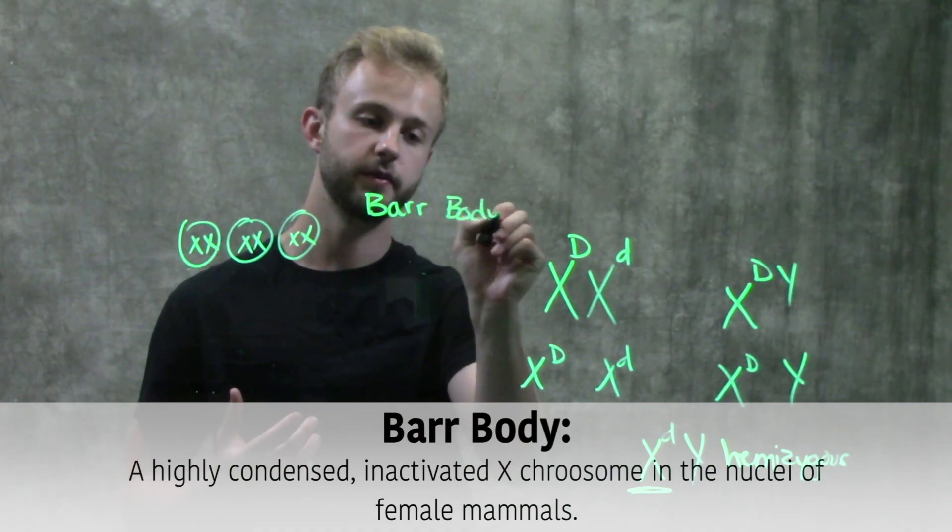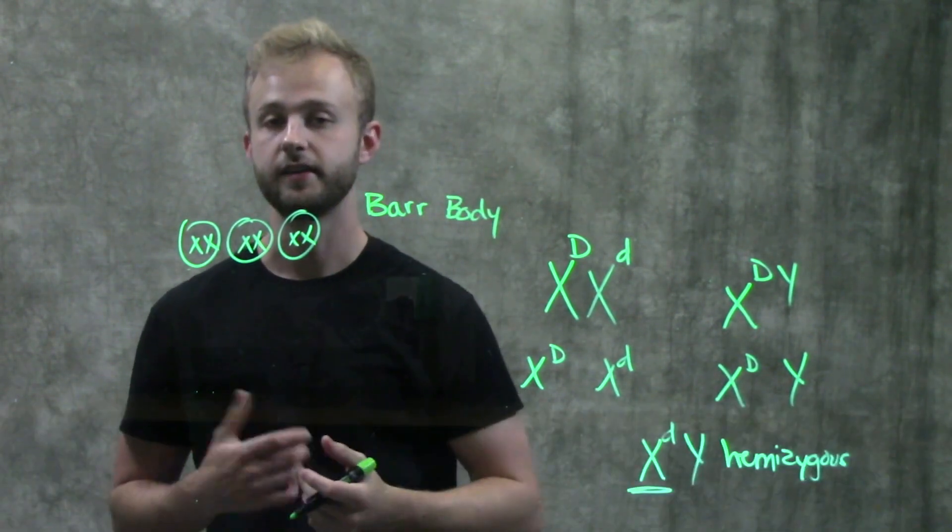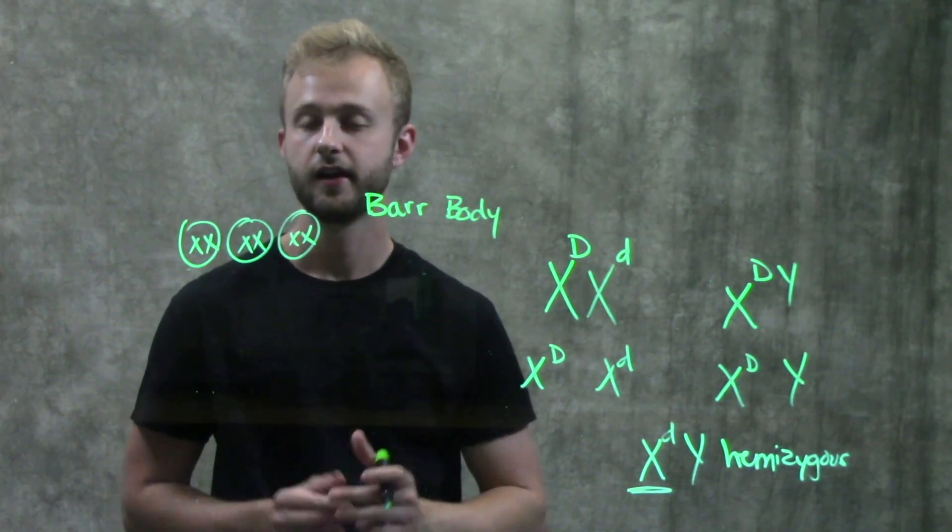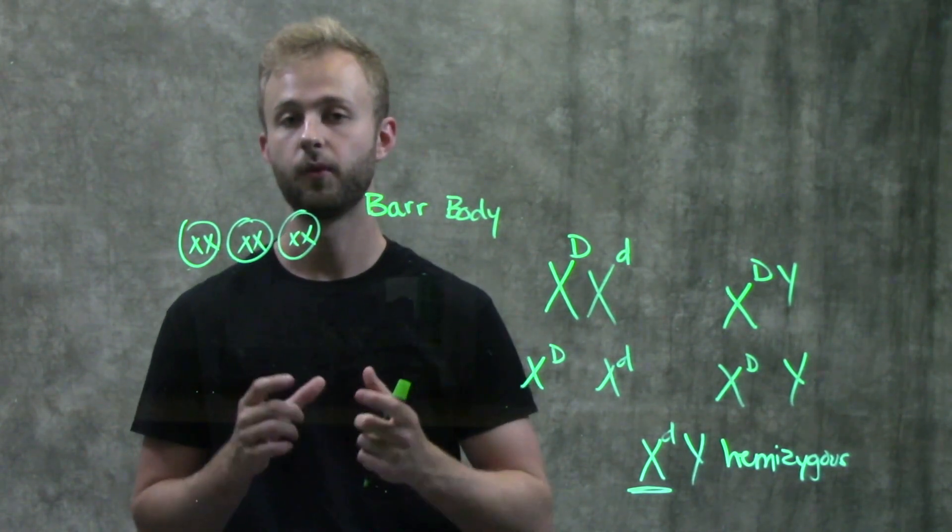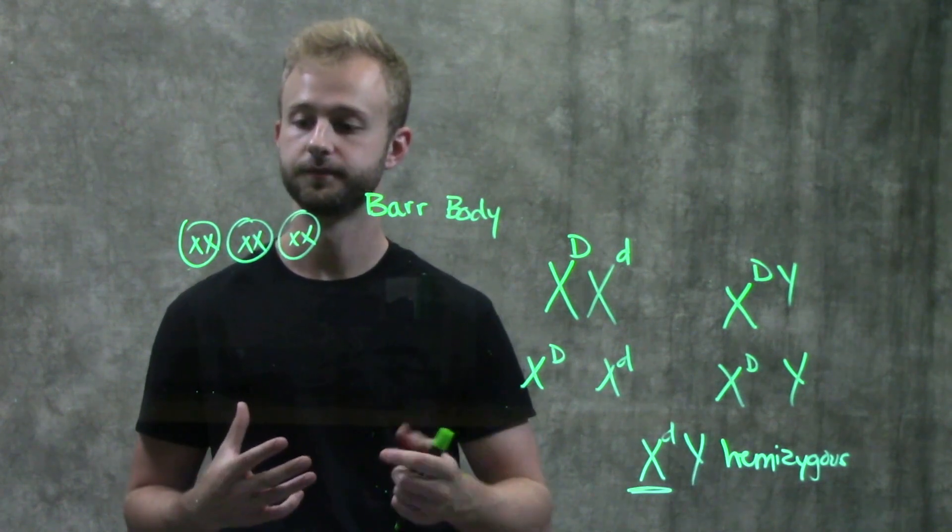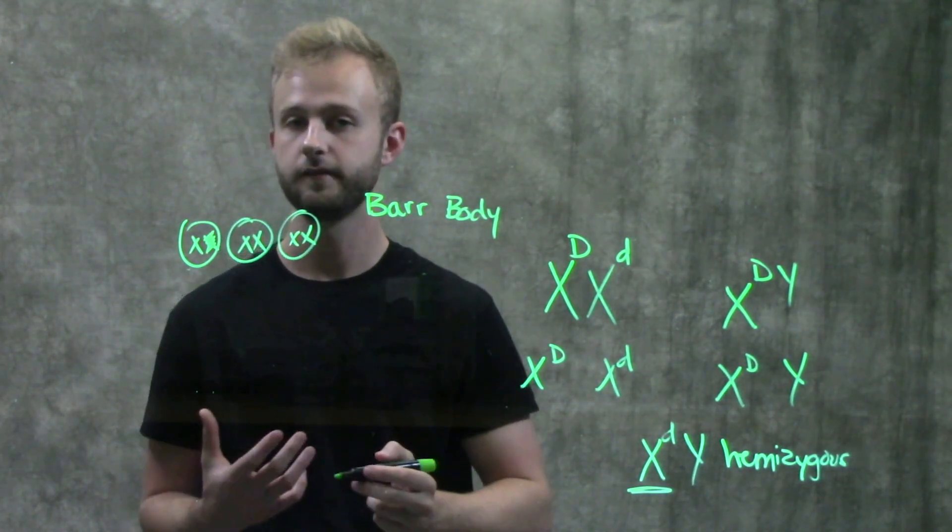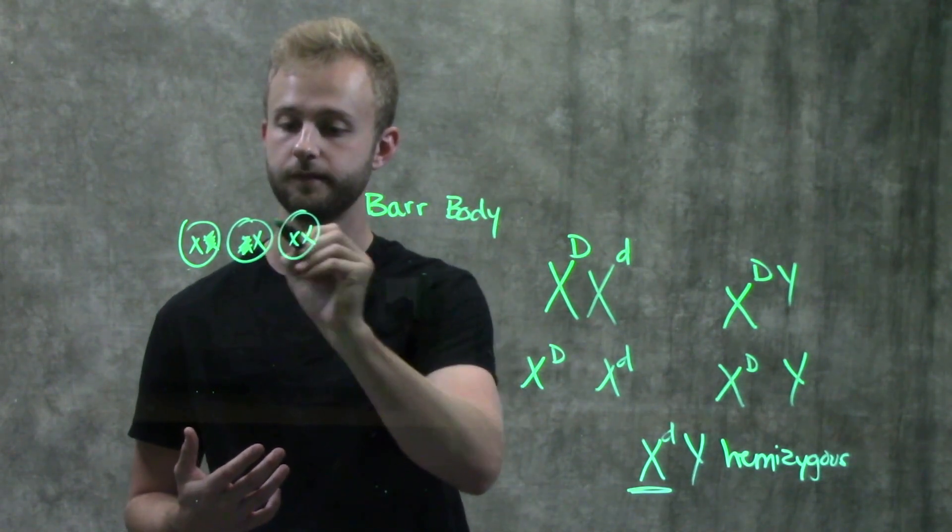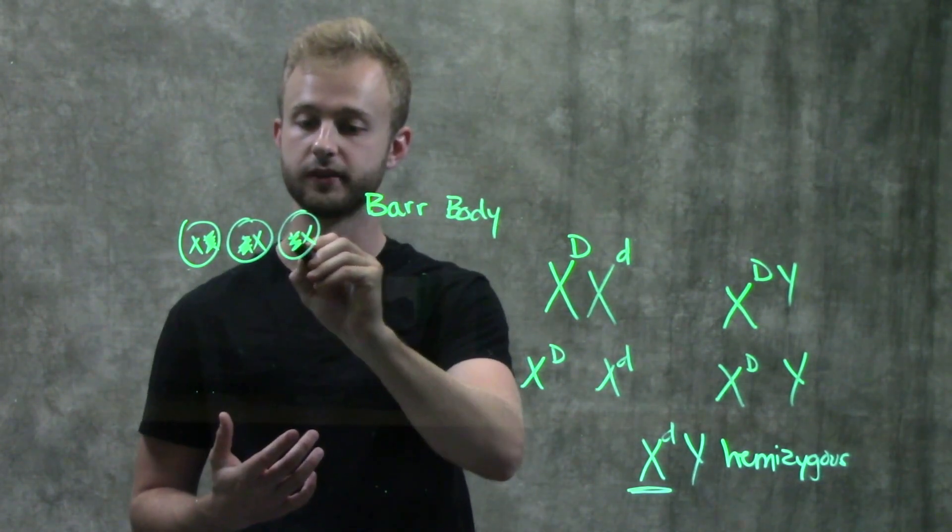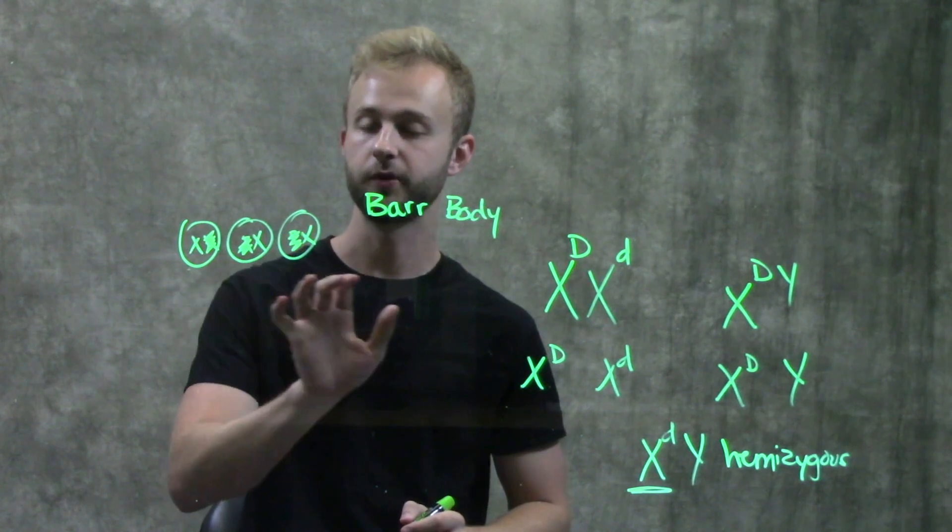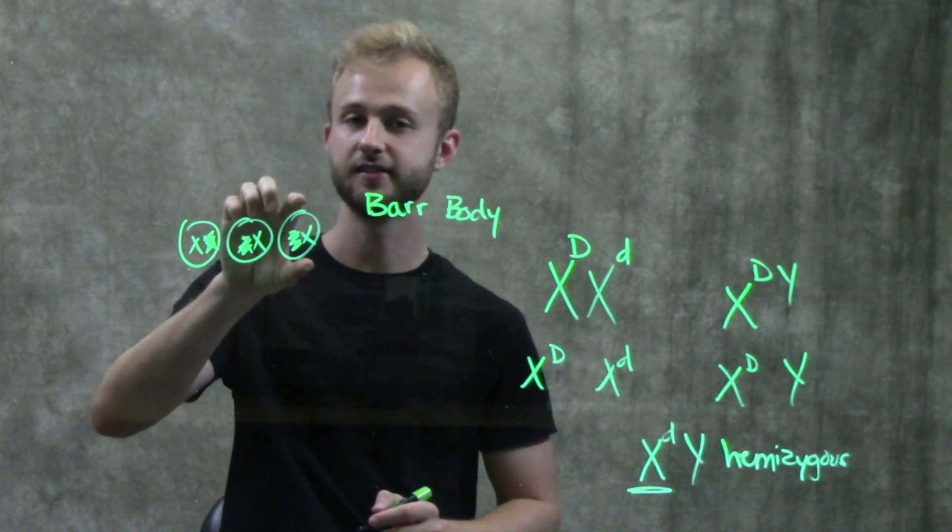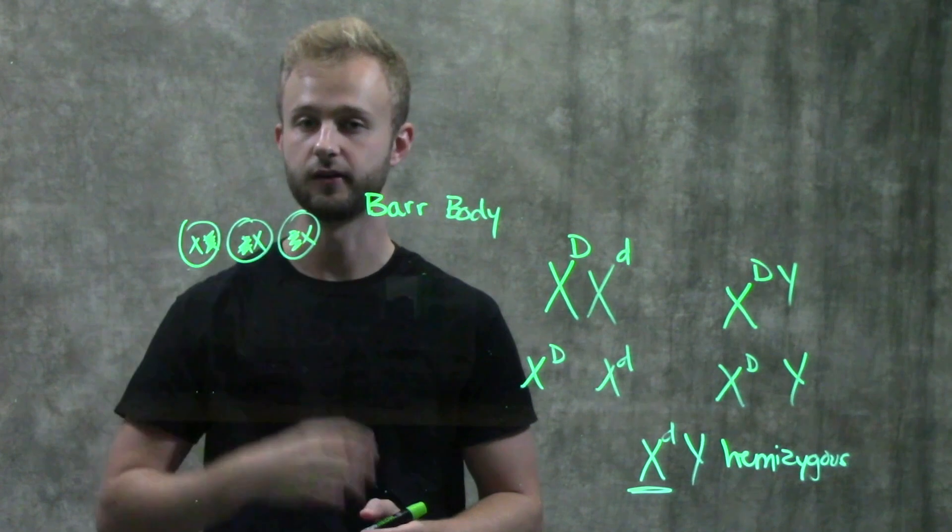So which chromosome becomes inactivated is a completely random process. And it's independent from what chromosomes inactivated in all of the other cells. So for example, in this first cell, we could have this chromosome get inactivated. In the second one, it could be this one. And in the third one, it could also be this one. And so these all happen randomly. And what happens in this cell doesn't affect what happens in this cell or in this cell.